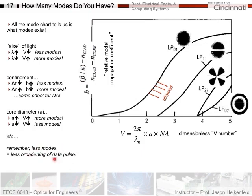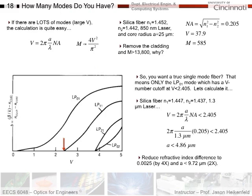Now, if there are lots of modes, you can actually just calculate it numerically. If you have a large V number, you can just calculate it numerically. So here's how you calculate V number. 2 pi, core radius, wavelength of light, numerical aperture for the fiber. And then the number of modes is 4V squared. This V number goes in here, divided by pi squared.